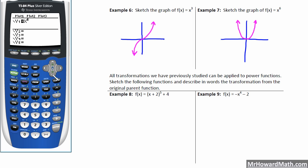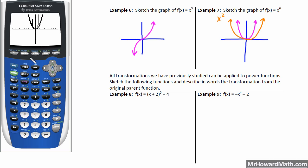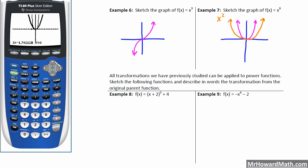Now let's graph x to the 6th compared to x squared, making the x squared graph darker so we can see. The x squared graph is going to be wider. So graphing x squared compared to x to the 6th, it's wider. X to the 6th is increasing at a rapid rate, so it's narrower. Then when we zoom box between negative 1 and 1, you can actually see how x to the 6th — the thinner graph — is actually going to be flatter in this zone compared to the thicker x squared graph.